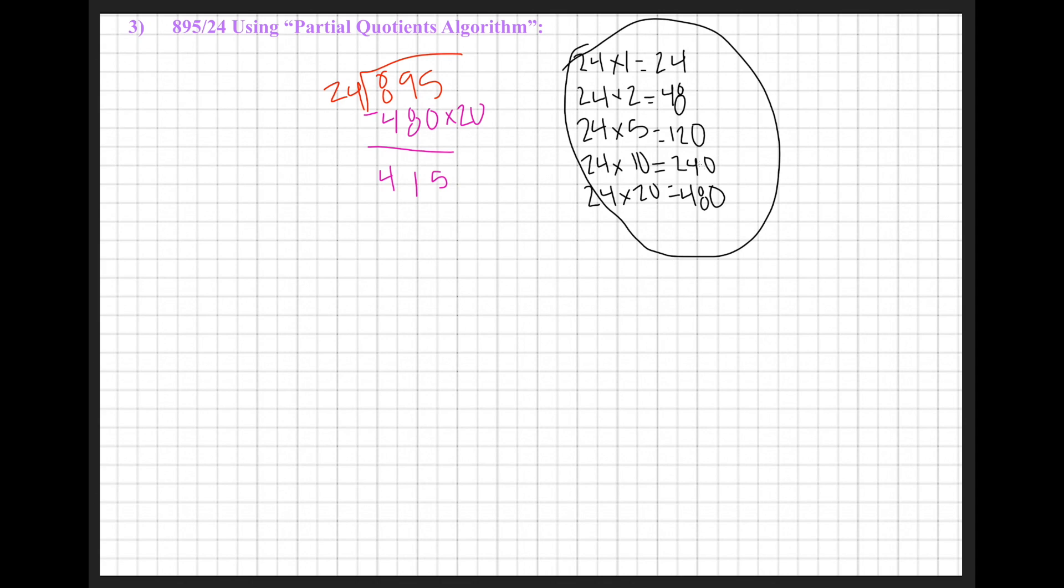The next number that I know fits into 415 would be 240, since I can't take 480 away from 415 without getting negative. My next best option is 240, which is 24 times 10. I'm going to subtract this to find that 415 minus 240 is 175.